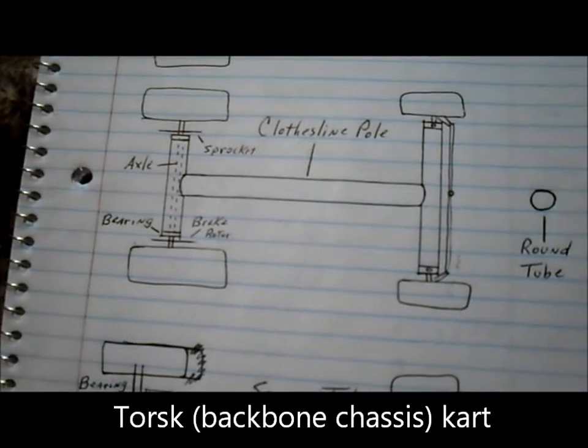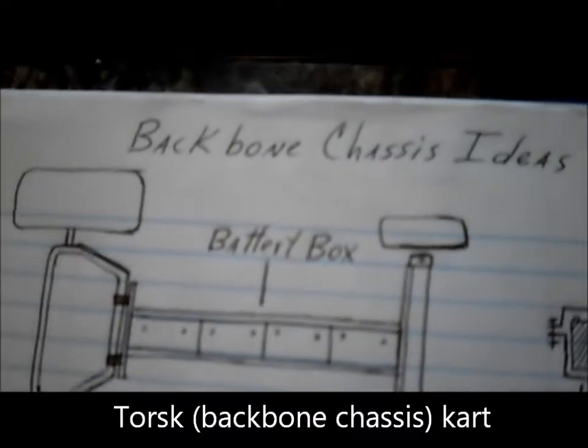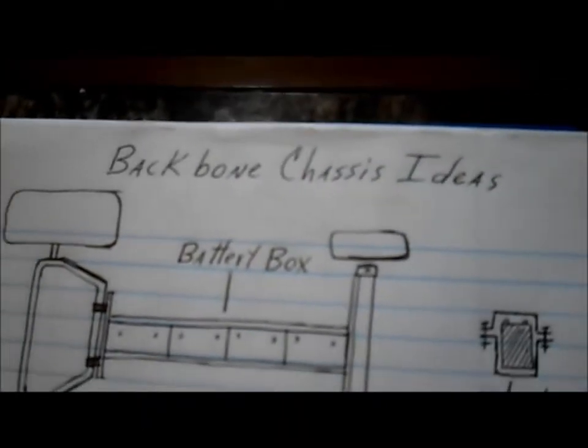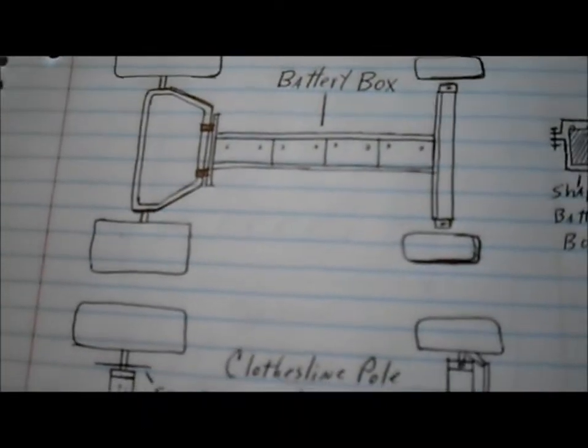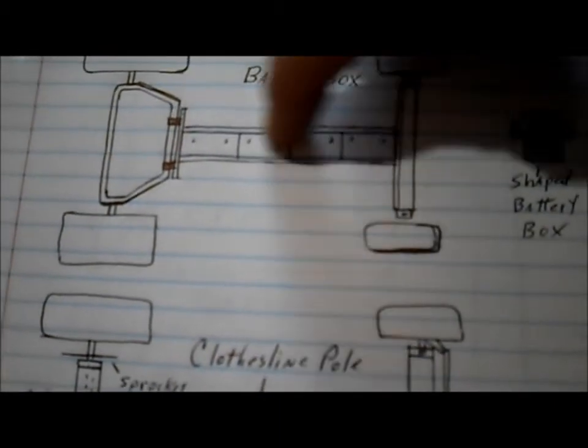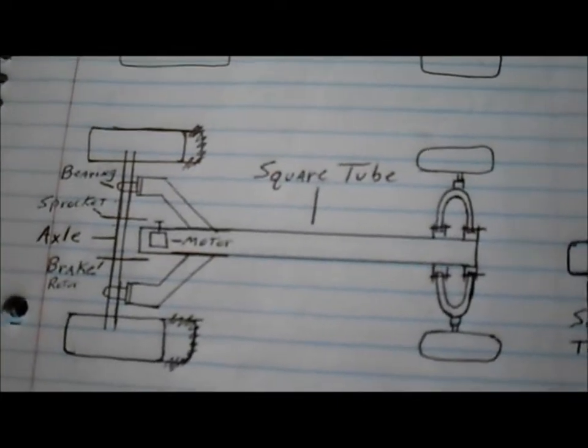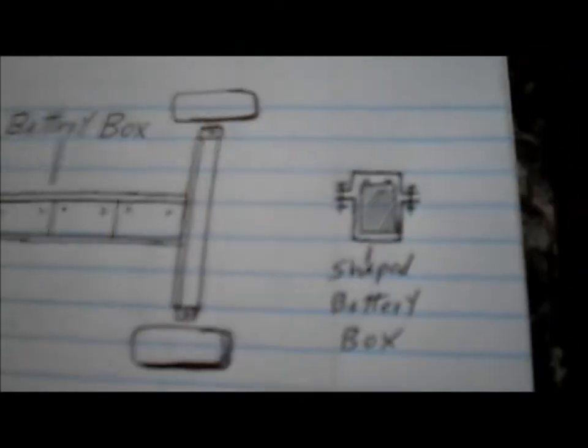Working on a new project, this one is going to be a backbone chassis which means it has a primary backbone and then the wheels are attached to that backbone front and back. Here are several different ideas.